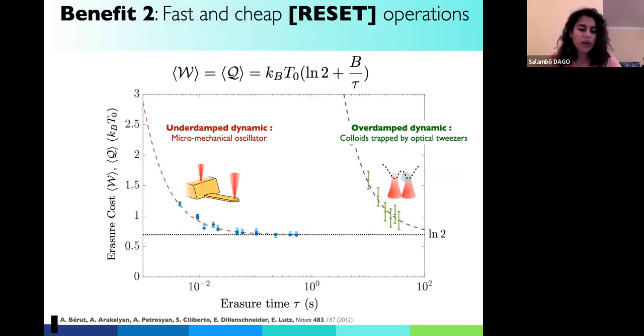The second benefit is that we can also be faster and cheaper for reset operations. This is, again, the plot you had before, this time not with the speed, but with the characteristic erasure time. And you can see that there is the same trend. You have to pay more if you go faster. But using underdamped dynamics, we were able to reach the minimal possible cost, which is the Landauer bound, several order of magnitude faster than what was done in overdamped dynamics in previous studies. So again, it's a really huge benefit.